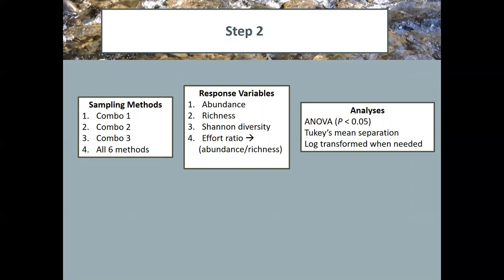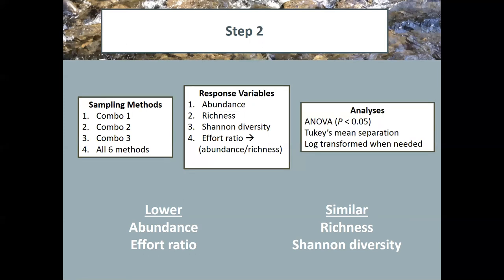And then step two, we will have eliminated a couple of sampling methods in step one. And then all six methods, the full bioassessment will be compared to doing three different combinations. And those combinations will have a reduced set of sampling methods. Same response variable, same analysis. And in that comparison, we want something that has a lower abundance and a lower effort ratio than using all six methods. And something that also produces similar richness and similar Shannon diversity.